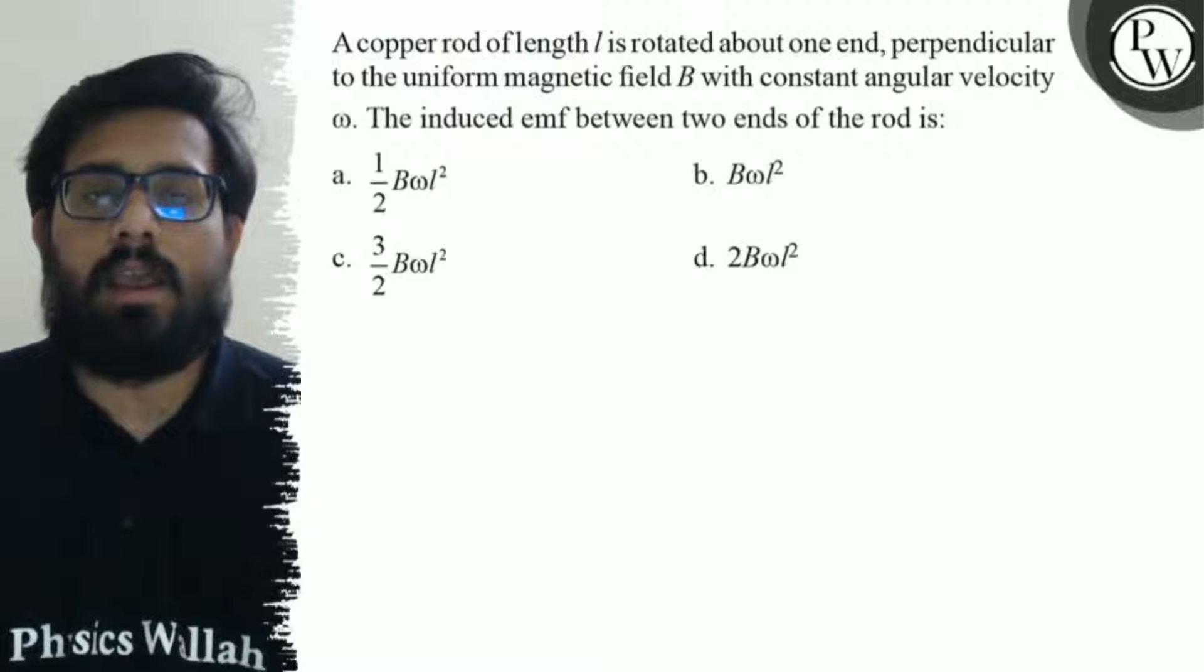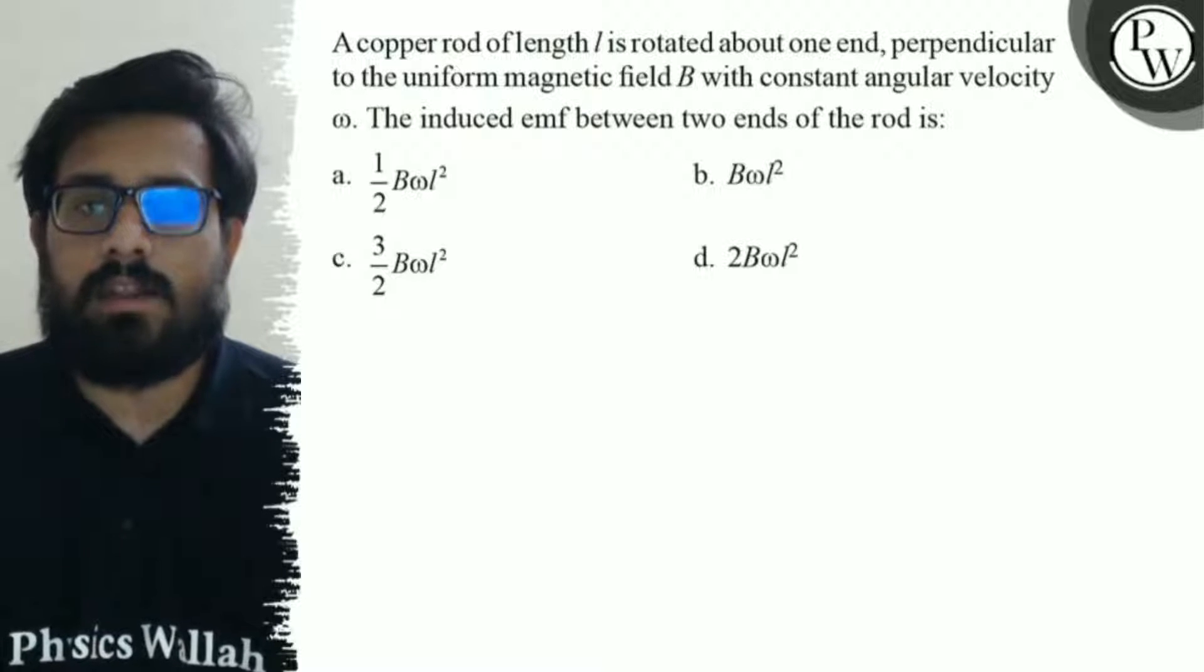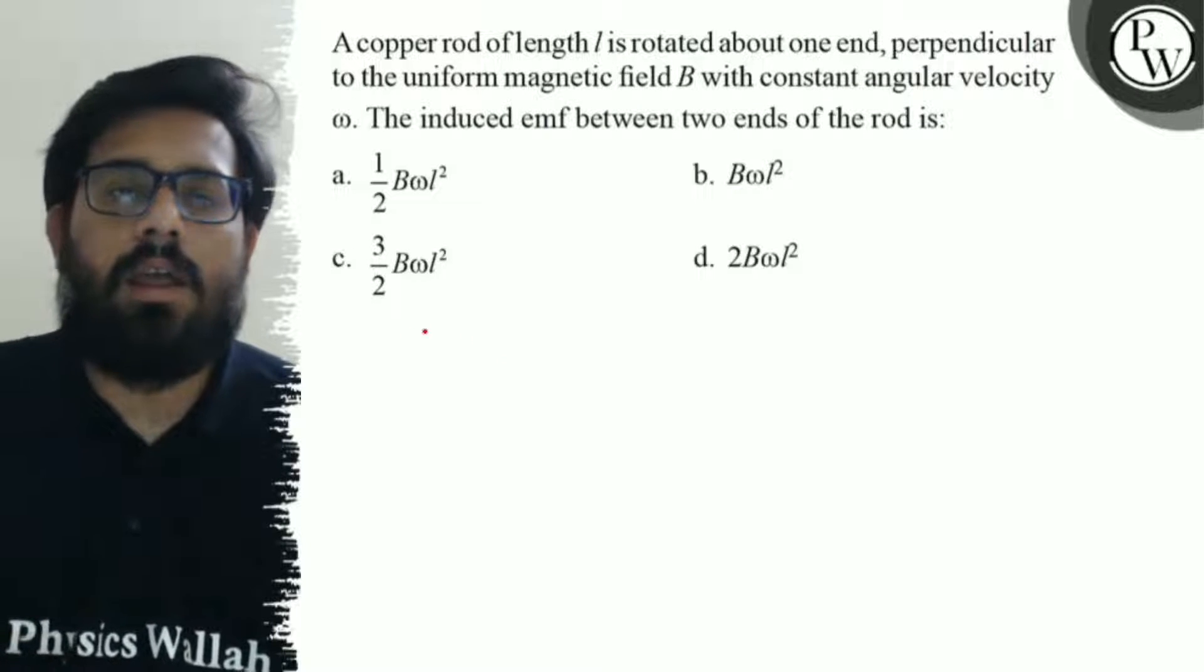Your first option is half B omega L square, second option is B omega L square, your third option is 3 by 2 B omega L square, your fourth option is 2 B omega L square.